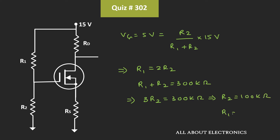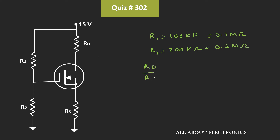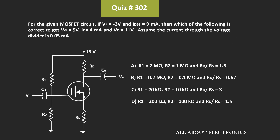While R1 is equal to 200kΩ. So in this way, we found the values of R1 and R2. R1 is equal to 200kΩ or 0.2MΩ, R2 is equal to 100kΩ or 0.1MΩ, while the ratio of RD to RS is equal to 0.667. From this we can say that for the given question, option B is the correct answer.